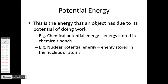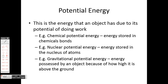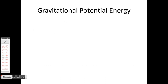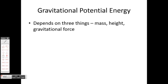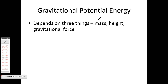Nuclear energy has the potential to do huge amounts of work. We're going to focus on gravitational potential energy — energy possessed by an object because of how high it is above the ground or whatever reference surface we're looking at. Gravitational potential energy depends on three things: the mass of the object, measured in kilograms; the height, measured in meters; and the gravitational acceleration.